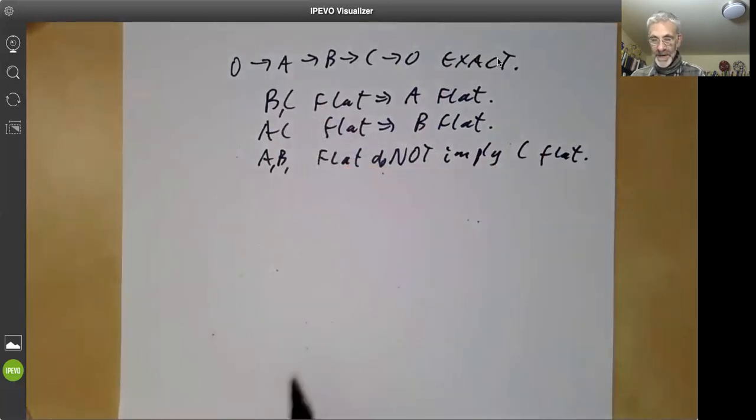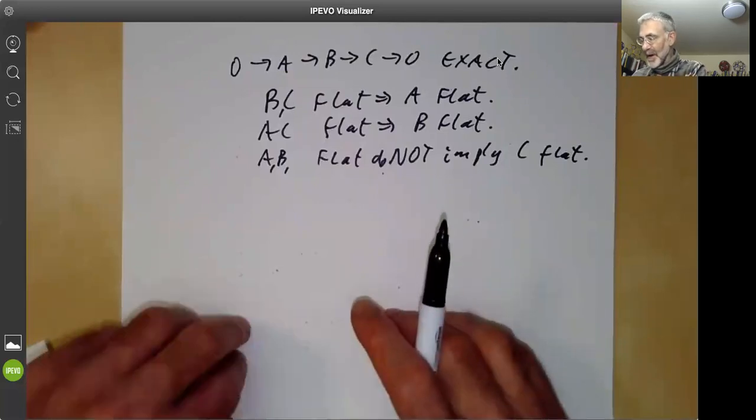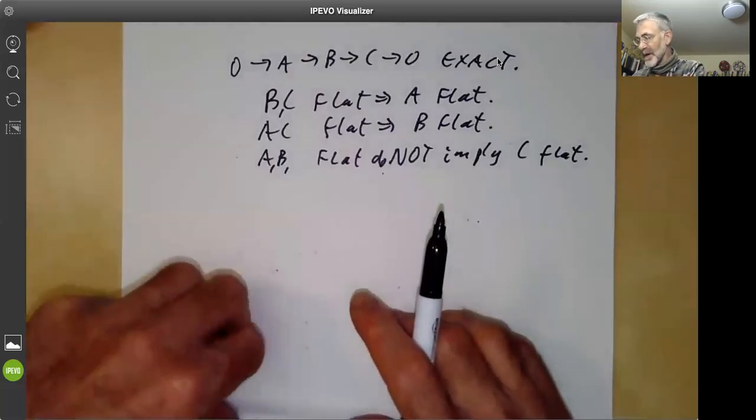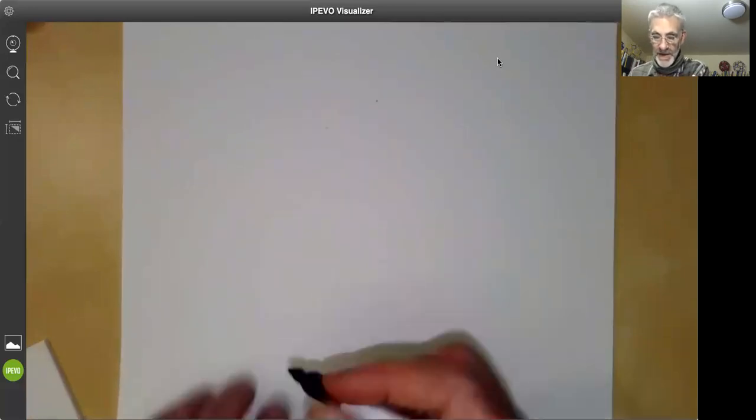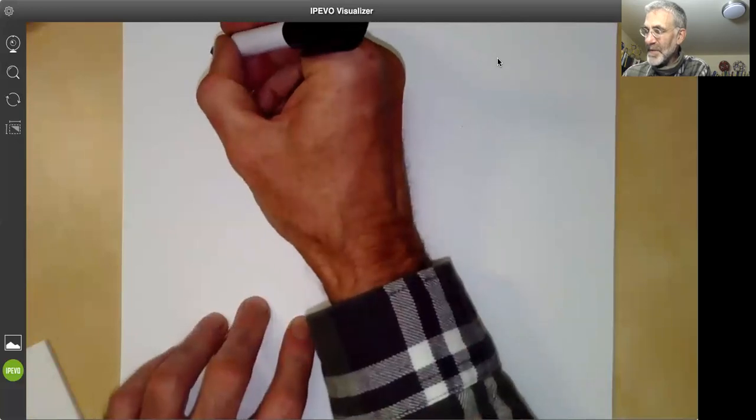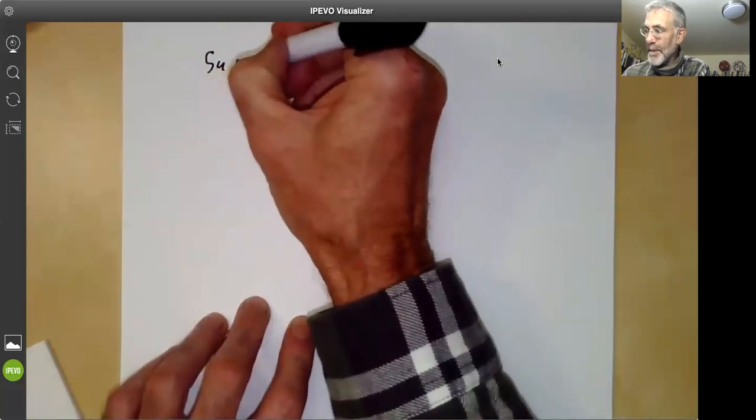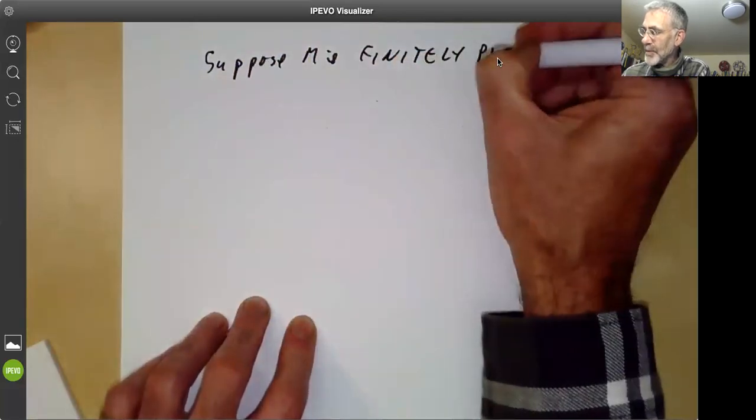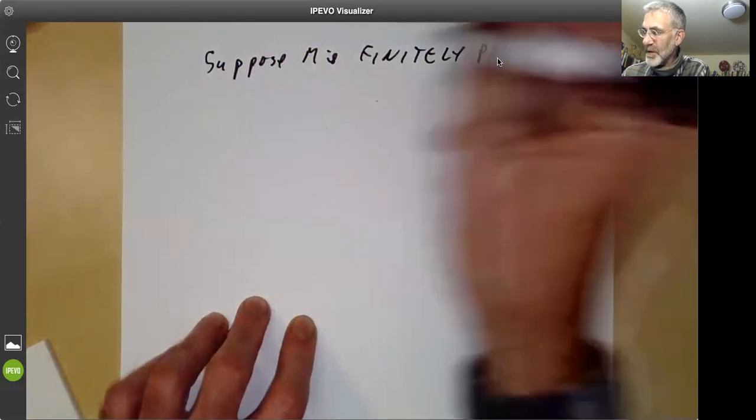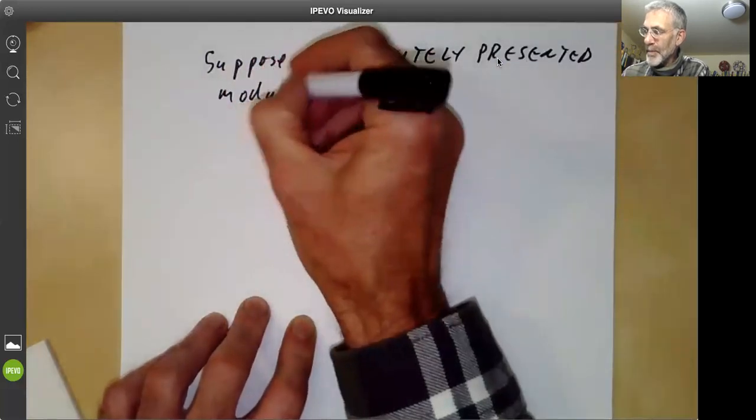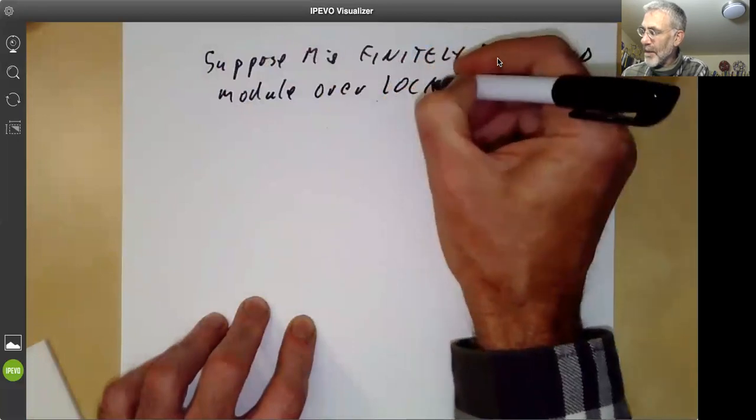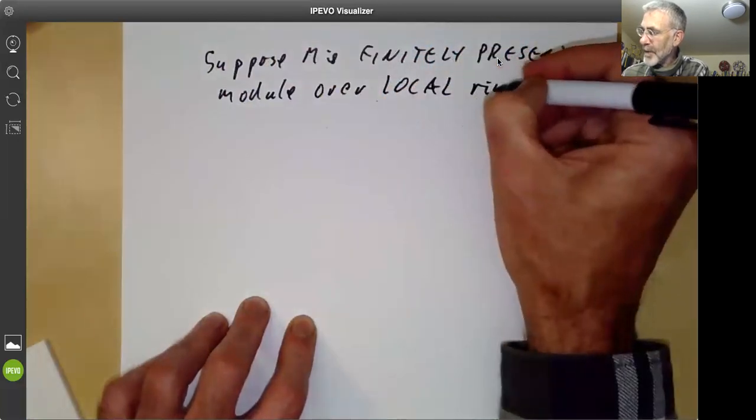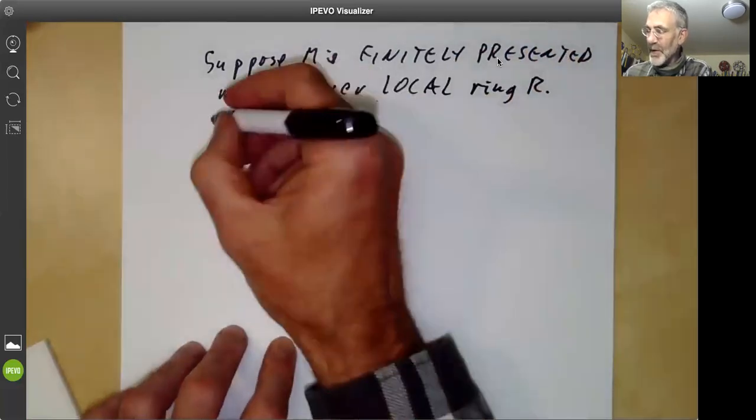And one of the key things that makes flat modules really useful, apart from the fact they're rather common, is that flat modules over local rings behave really nicely, at least if they're finitely presented. So here we have the main theorem. Suppose M is a finitely presented module over a local ring, then the following are equivalent.